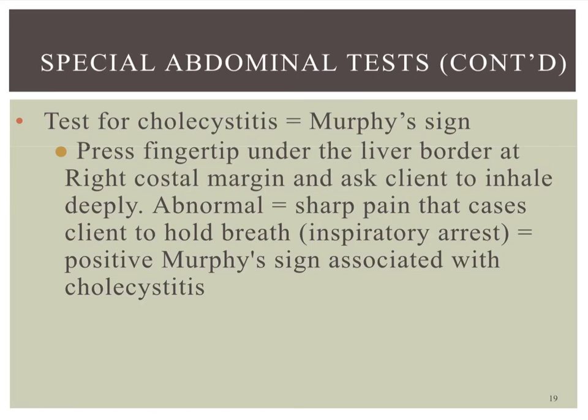The last test is the Murphy sign, which is for cholecystitis — inflammation of the gallbladder. You press your fingertips deep under the right costal ridge, just under the ribcage below the liver border, and ask the client to inhale deeply. A positive Murphy sign is when they have sharp pain that causes them to catch their breath — it basically takes their breath away.